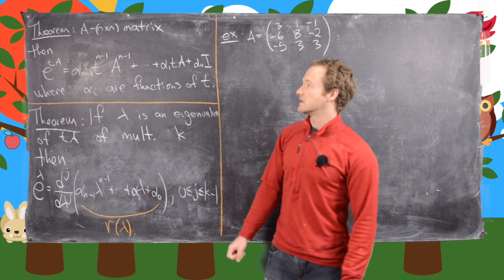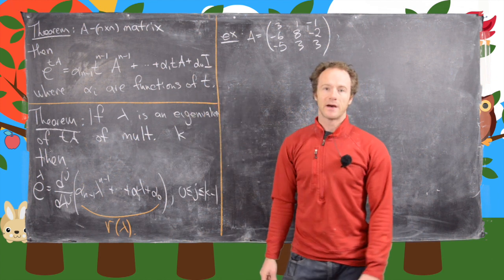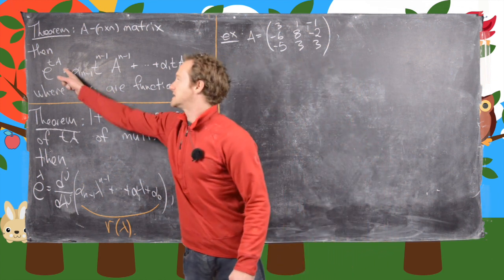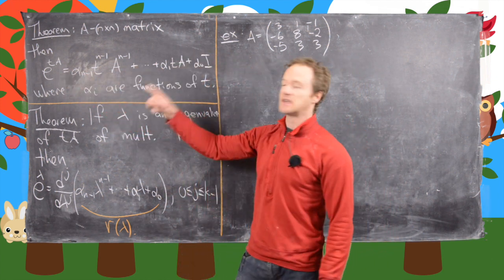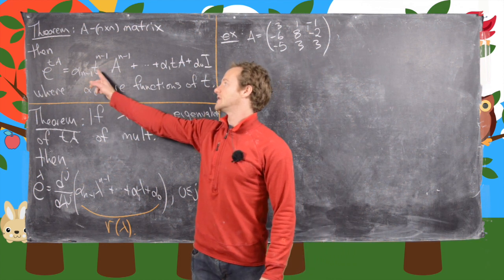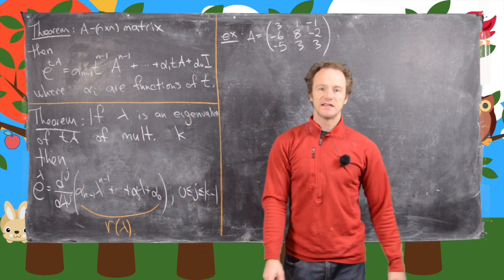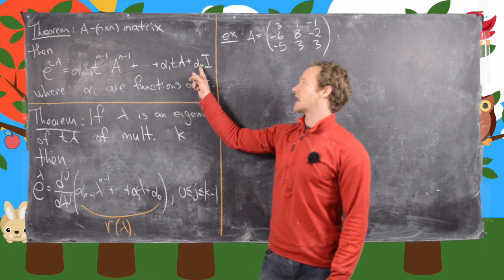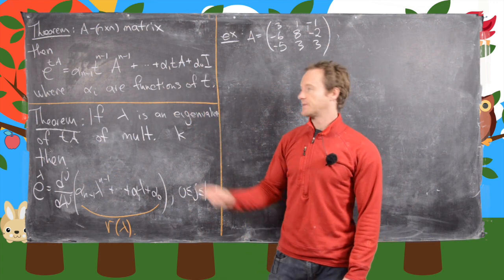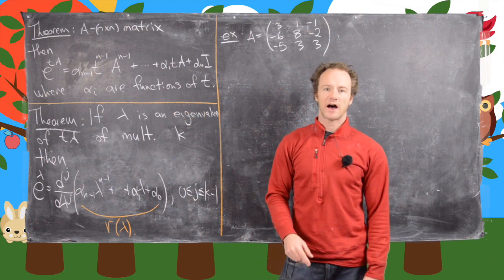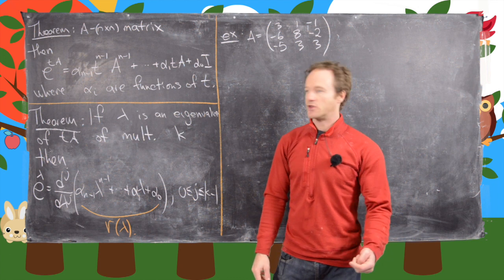Okay, so now let's see what we've got here. If A is an n by n matrix, then we can write e to the tA as this descending sum: alpha_{n-1}*t^{n-1}*A^{n-1} all the way down to alpha_0 times the identity matrix. And the important thing here is that these alpha_i's are functions of t, so they're not numbers.